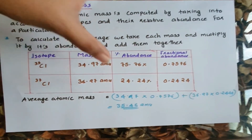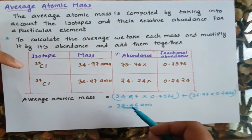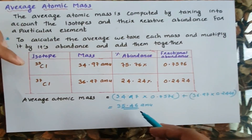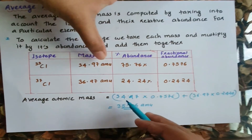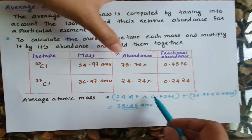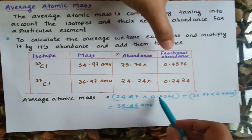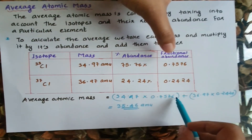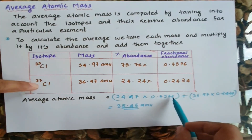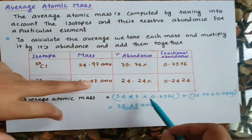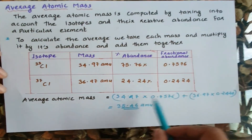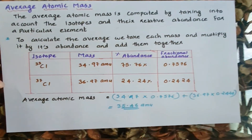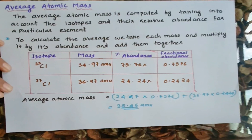Let's calculate the average atomic mass. Chlorine-35 has a mass of 34.97 amu and a fractional abundance of 0.7576. We multiply each isotope's mass by its fractional abundance and add the results together to get the average atomic mass of chlorine.